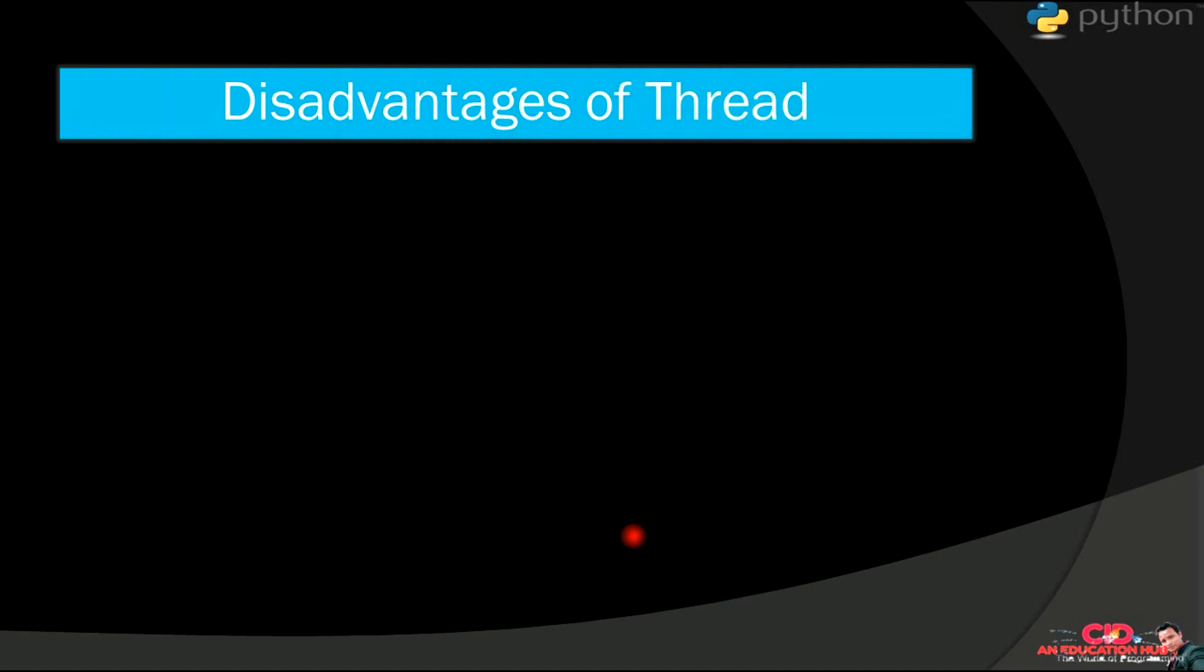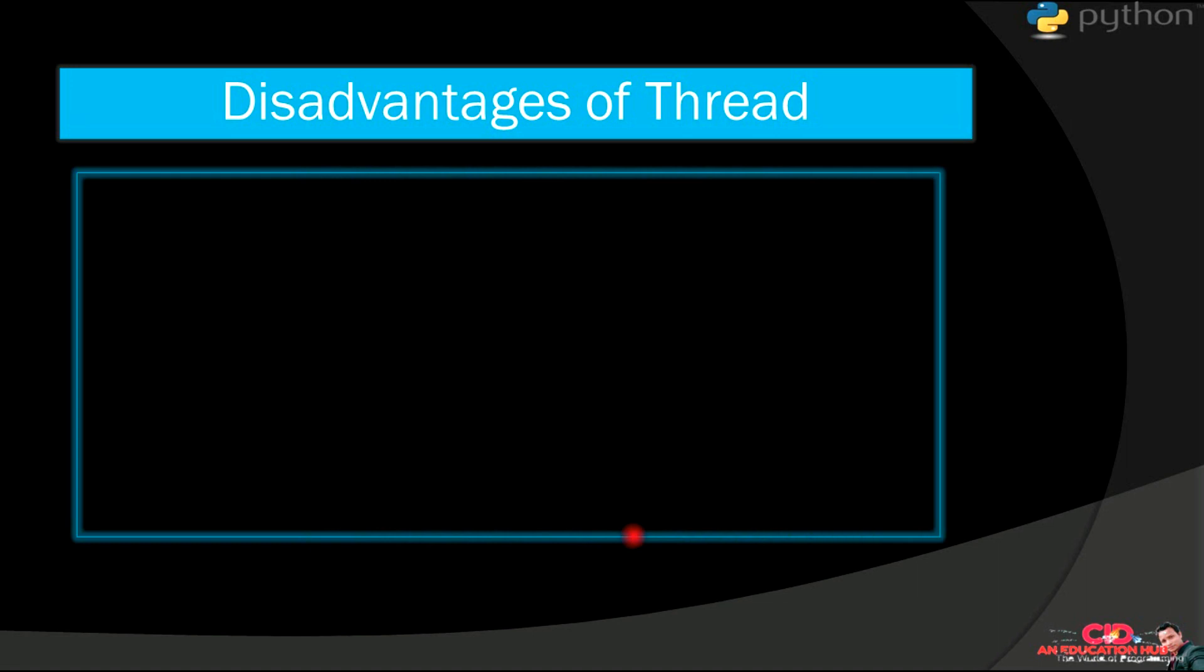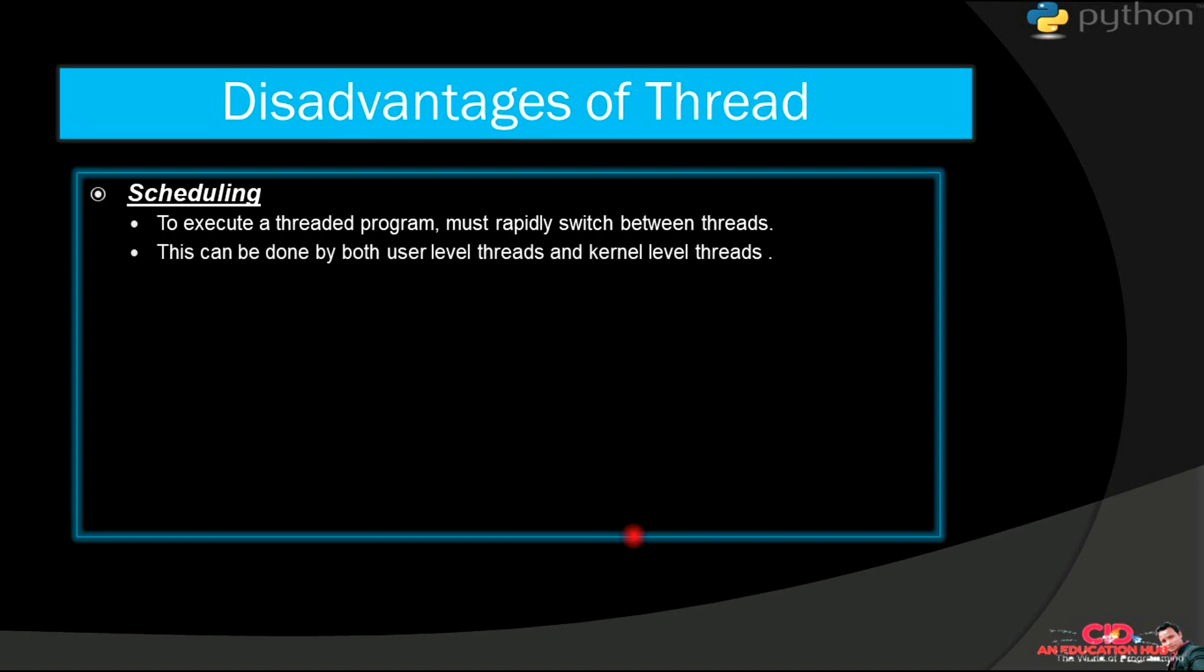Disadvantages of threads. First is scheduling. To execute a threaded program, you must rapidly switch between threads. This will be a problem that if you are running a threaded program, then you will have to switch all the threads time to time. This can be done by both user level threads and kernel level threads. We will understand this in next video.